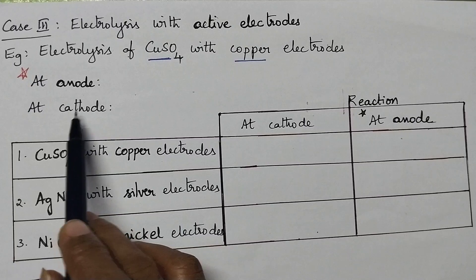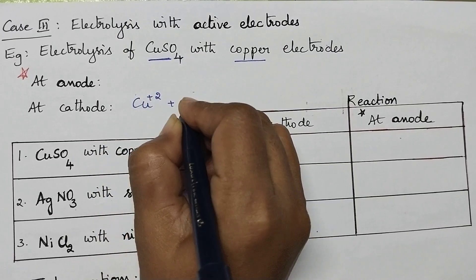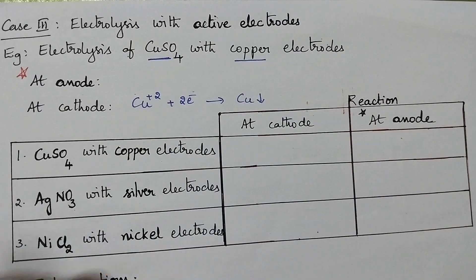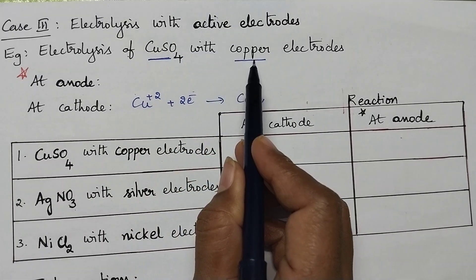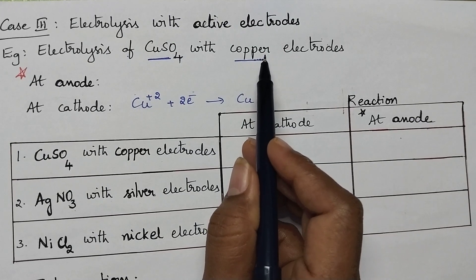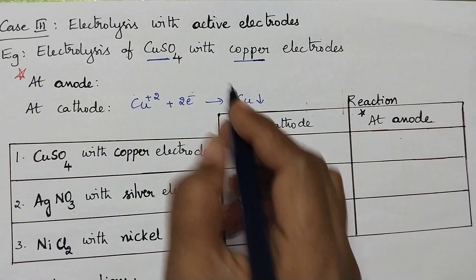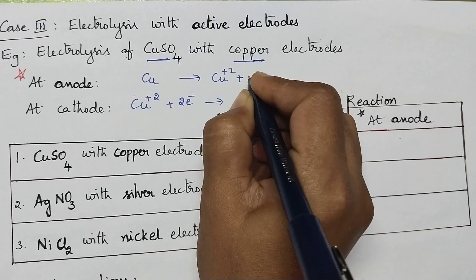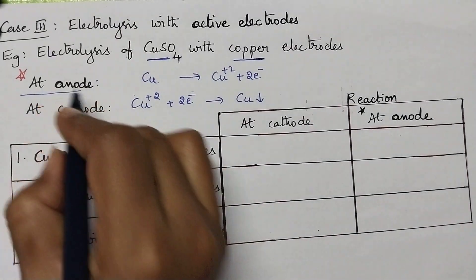There will be no change at the cathode in terms of process type — the Cu²⁺ ions get reduced into copper metal. Coming to the reaction at the anode, here sulfate ions are present. But because we are using a copper electrode, which is an active electrode, the copper starts dissolving. So in the case of active electrodes, the reaction at the anode is that the metal starts dissolving by liberating electrons.